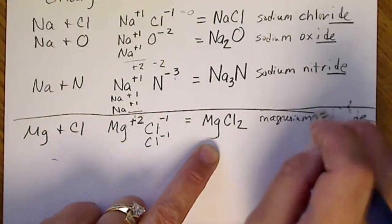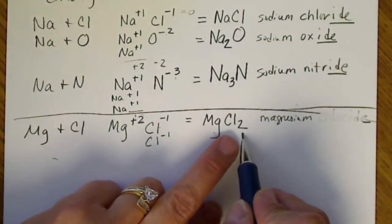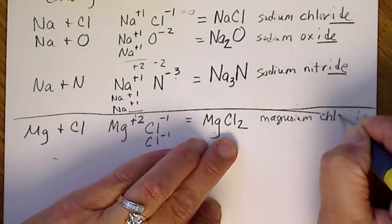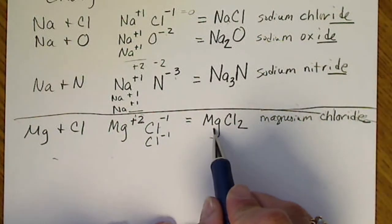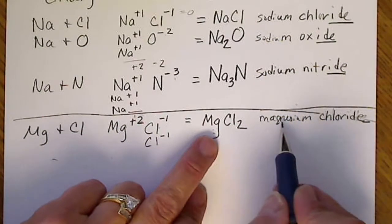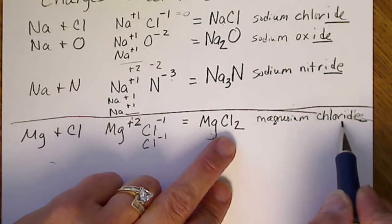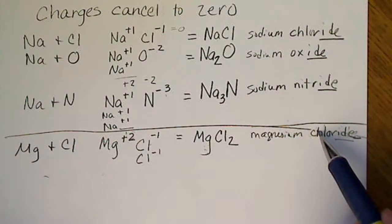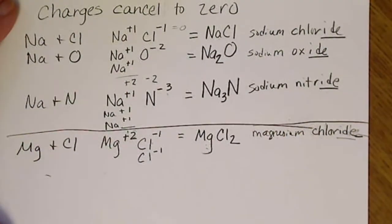So we will not use Greek prefixes. We're not going to say magnesium dichloride. So when we name ionic compounds, in other words, a compound that has a metal in it, we're just going to name the metal, the full name, and then we're going to name the nonmetal. And so this has the same name, technically, as sodium chloride. But the formula is different because the charges are different.